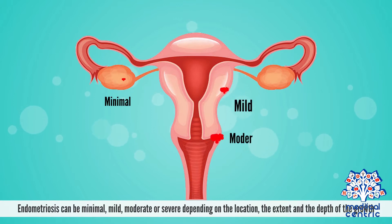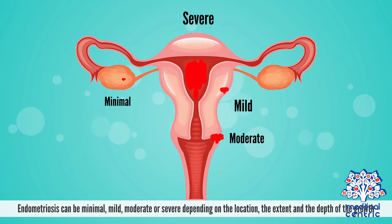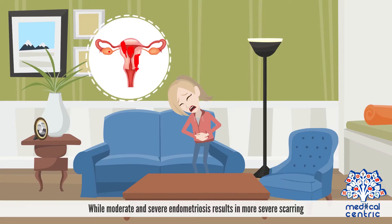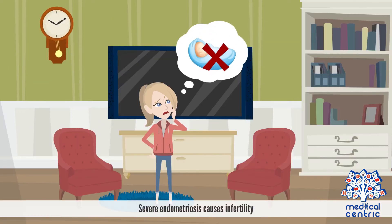Endometriosis can be minimal, mild, moderate, or severe, depending on the location, the extent, and the depth of the growth. Minimal or mild endometriosis results in mild scarring, while moderate and severe endometriosis results in more severe scarring. Severe endometriosis causes infertility.